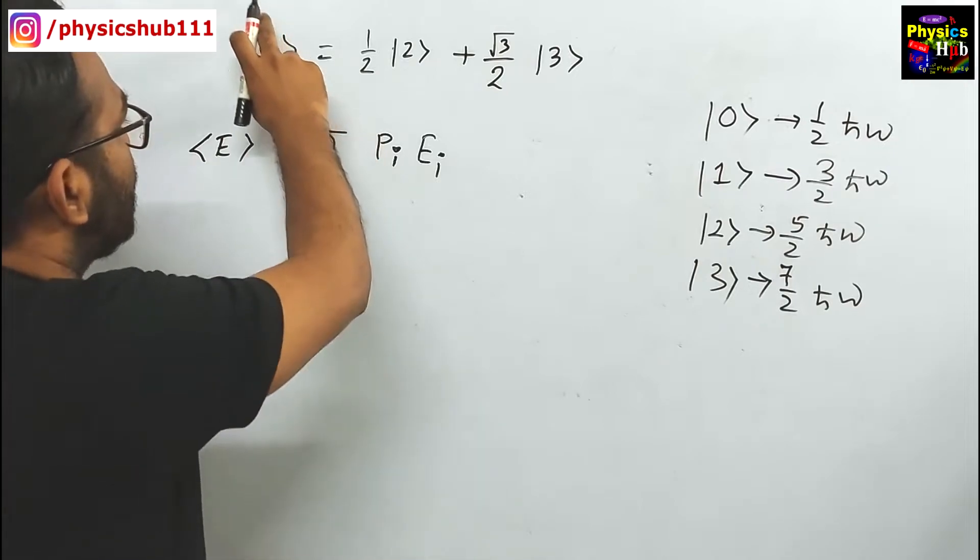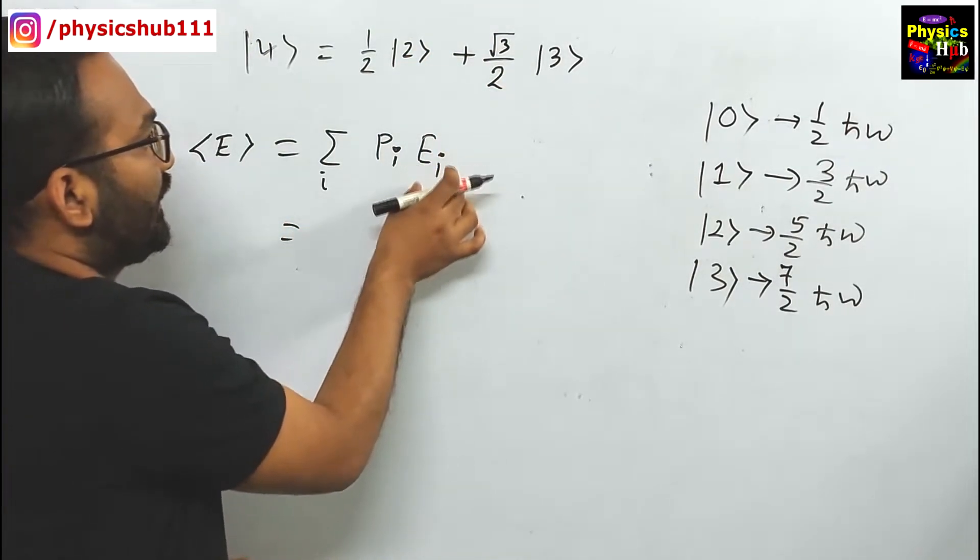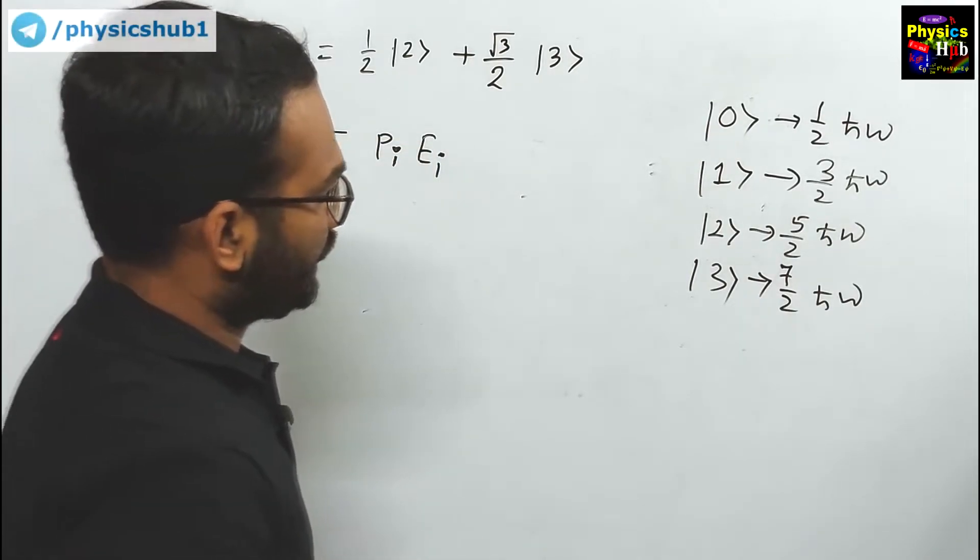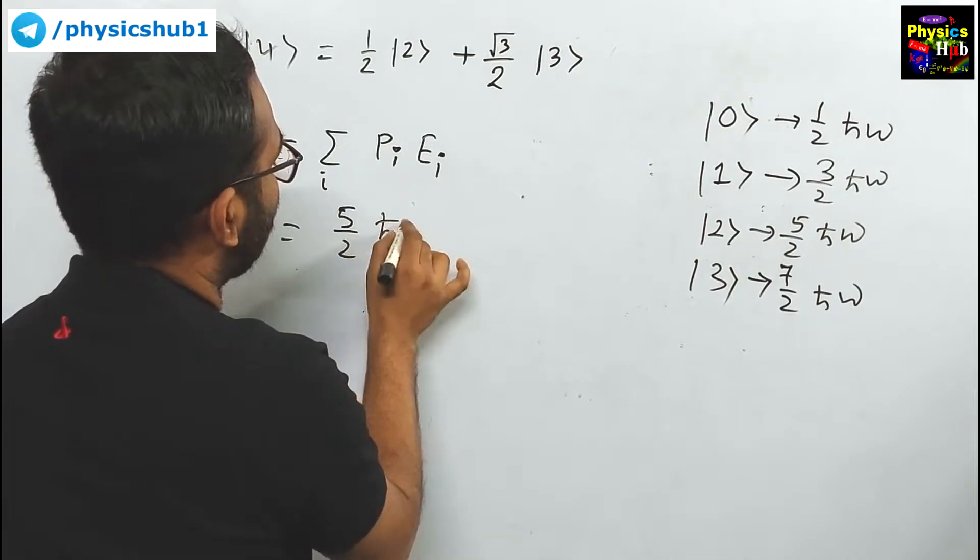As the wave function is a superposition of two states, what is the energy corresponding to these? The corresponding energy is 5/2 ℏω with its probability.